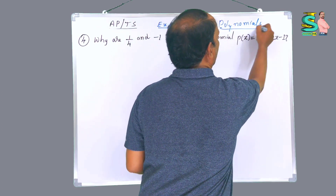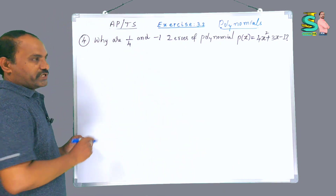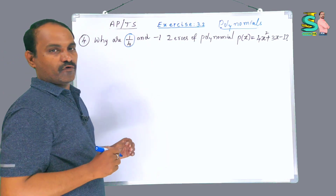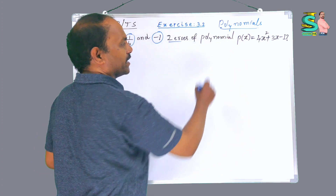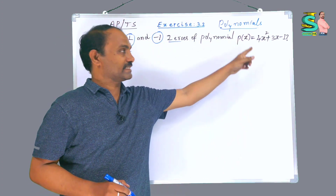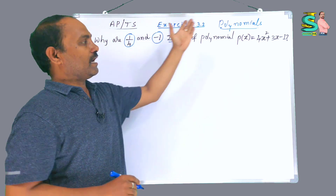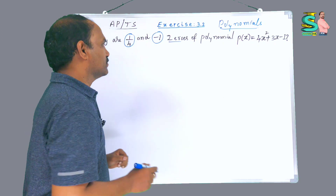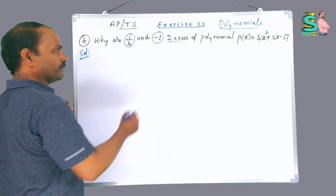From the Polynomials chapter, what is given in the question? Why are 1/4 and -1 zeros of the polynomial 4x² + 3x - 1? Why are these two the zeros of this polynomial? Now, solution given.